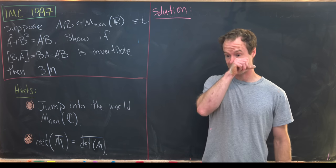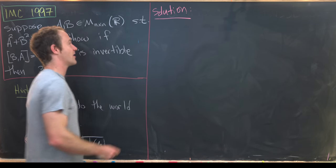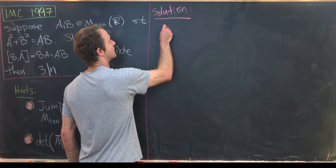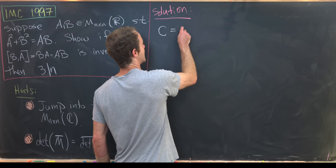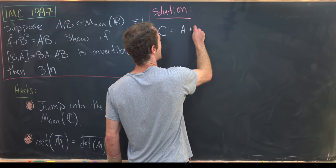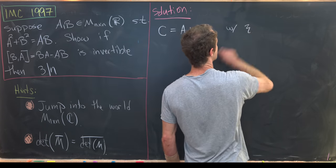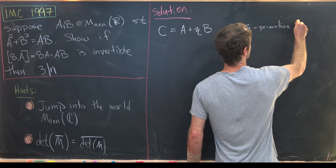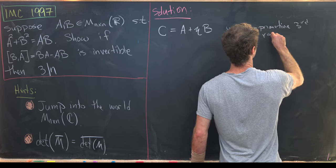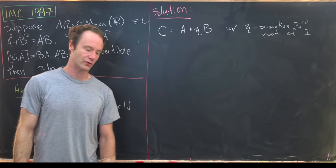So now let's dive into the solution. So I want to consider the following third matrix. So I'll call that matrix C. And that will be a combination of A and B. So it'll be A plus eta times B, where eta is a primitive third root of unity.